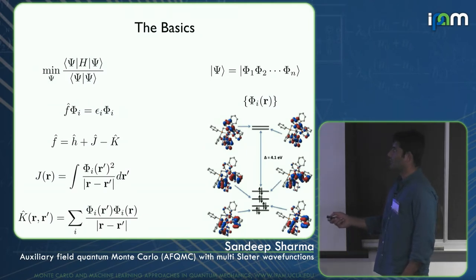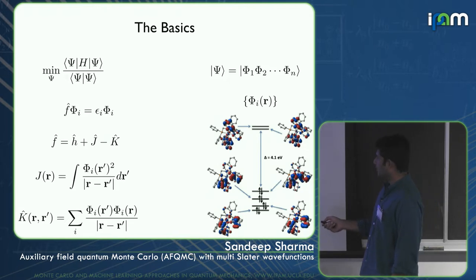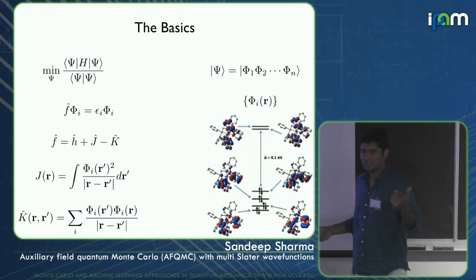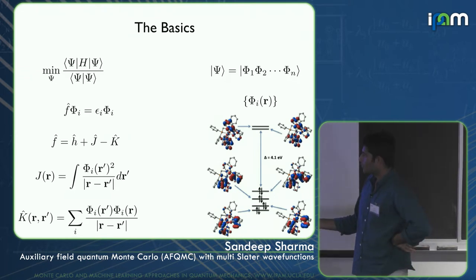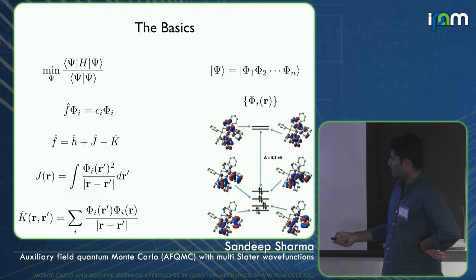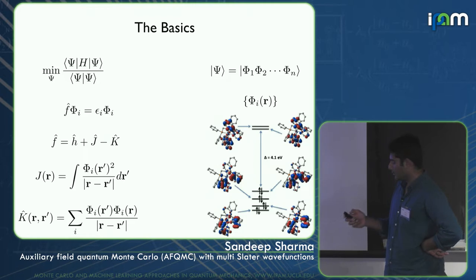What you do is take the Fock operator, diagonalize it, obtain the orbitals and their energies, then fill up the orbitals using Hund's rule. Based on what the filled orbitals are, you get a Coulomb operator and an exchange operator. The Coulomb operator, written in real space, is a completely diagonal operator, whereas exchange is actually a matrix even in real space, and its rank is equal to the number of electrons. So exchange is harder to deal with than the Coulomb part.